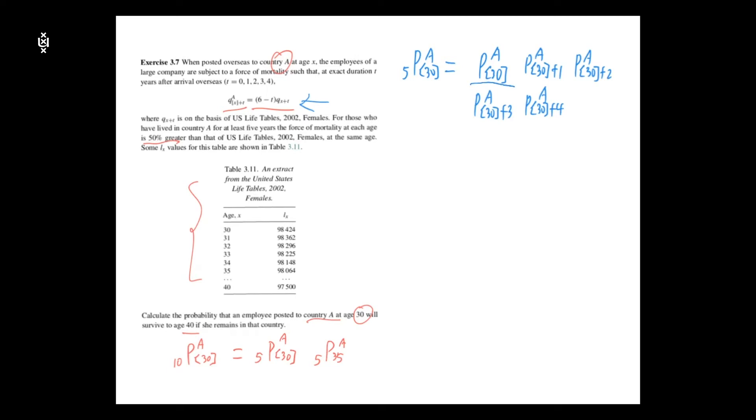for the first term, it can be plugged in this formula with t equals to zero. So it is 1 subtract when t equals to zero, so it is 6 times q, 30, and this is the probability of dying within one year based on U.S. population. And similarly,